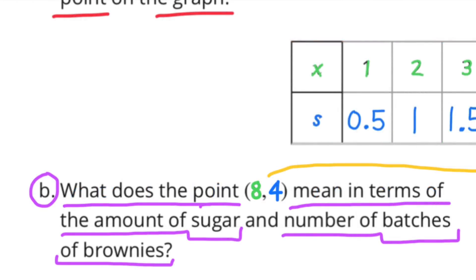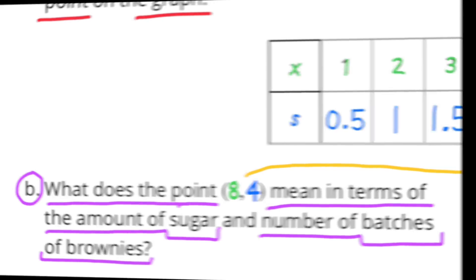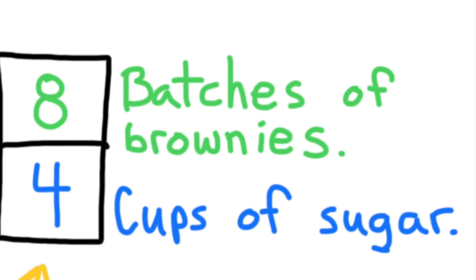B. What does the point with coordinates 8 and 4 mean in terms of the amount of sugar and number of batches of brownies? 8 batches of brownies uses 4 cups of sugar.